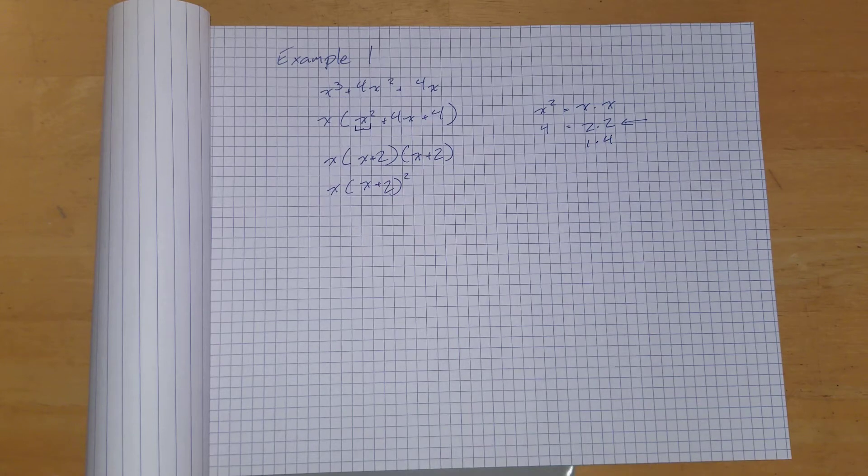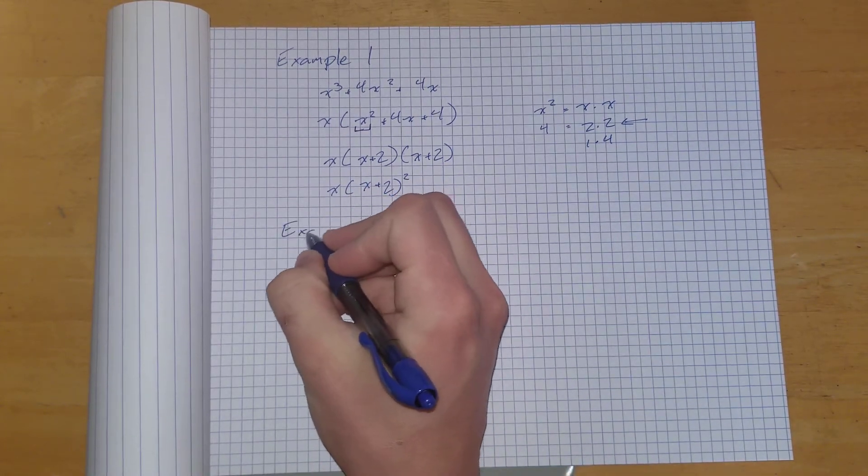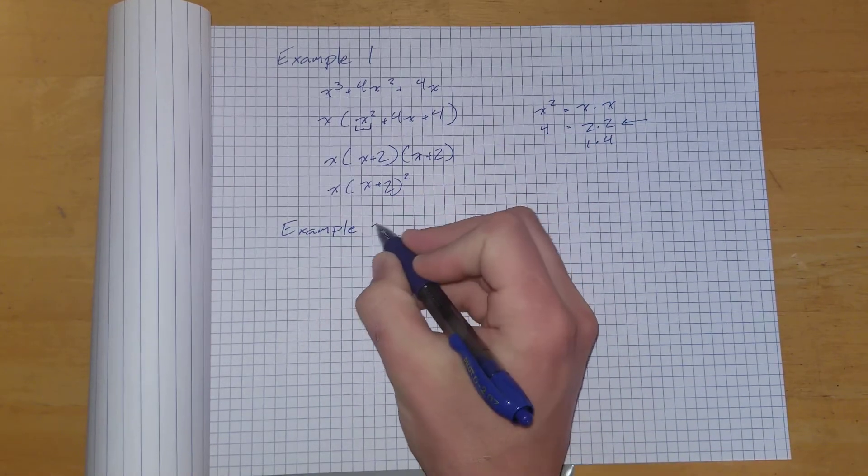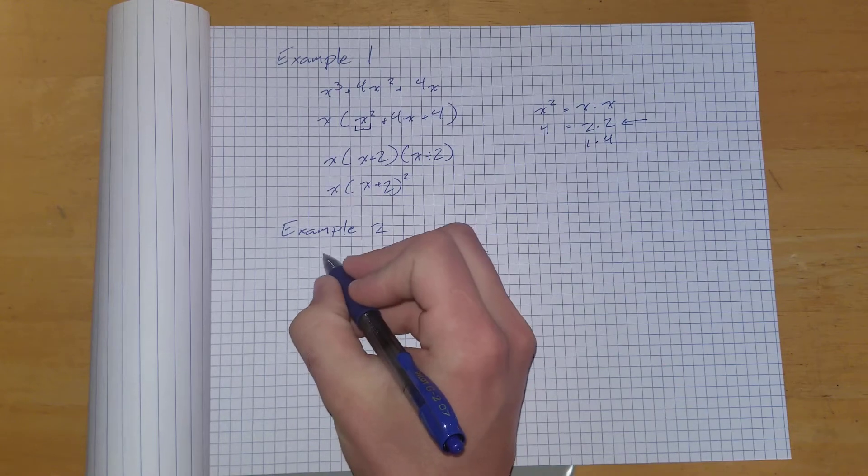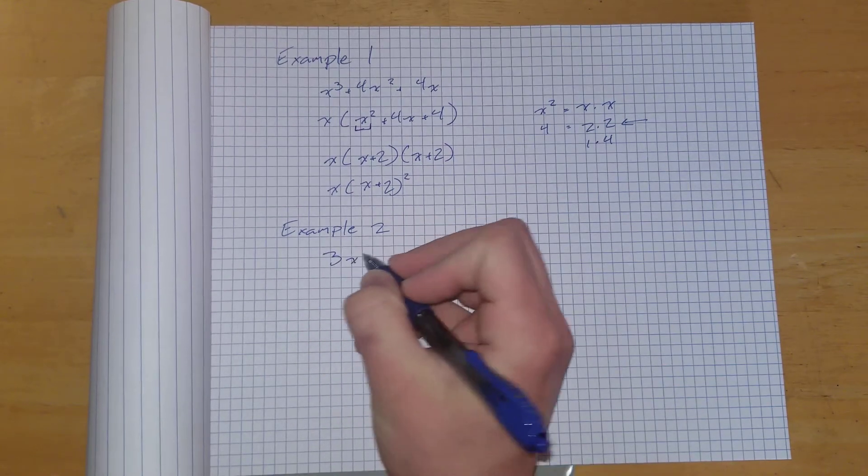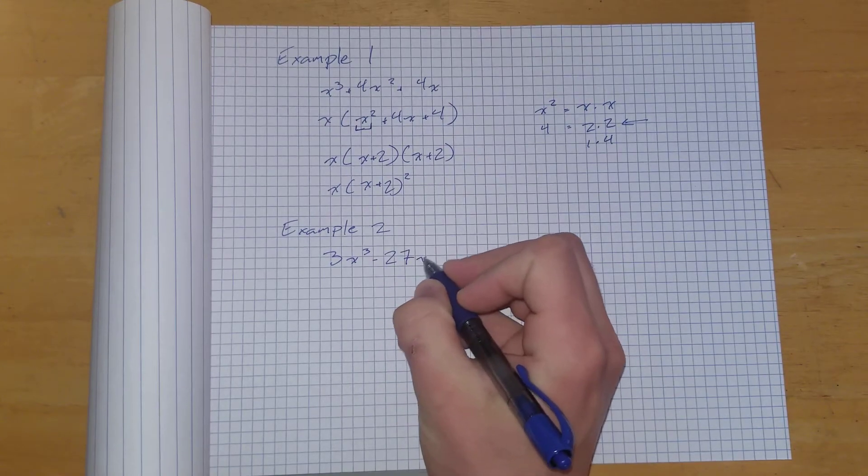Let us look at the second example, which is a little different. Example 2 asks to factor 3x cubed minus 27x.